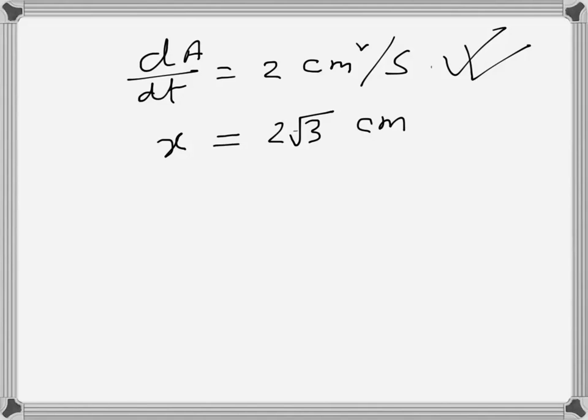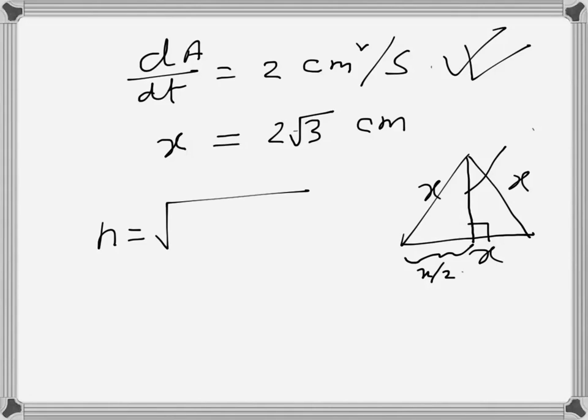The equilateral triangle is X, X, X here, and if I draw a perpendicular there, this one is X over 2 and this one is the height. The height can be found using Pythagoras theorem.